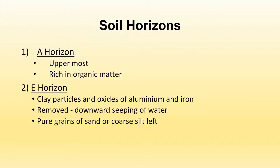The A horizon is the uppermost layer of the soil and is rich in organic matter. The E horizon contains clay particles and oxides of aluminium and iron. When rainwater falls on it, it removes some minerals from this layer, which seep downward with the water, leaving behind pure grains of sand or coarse silt in this horizon.